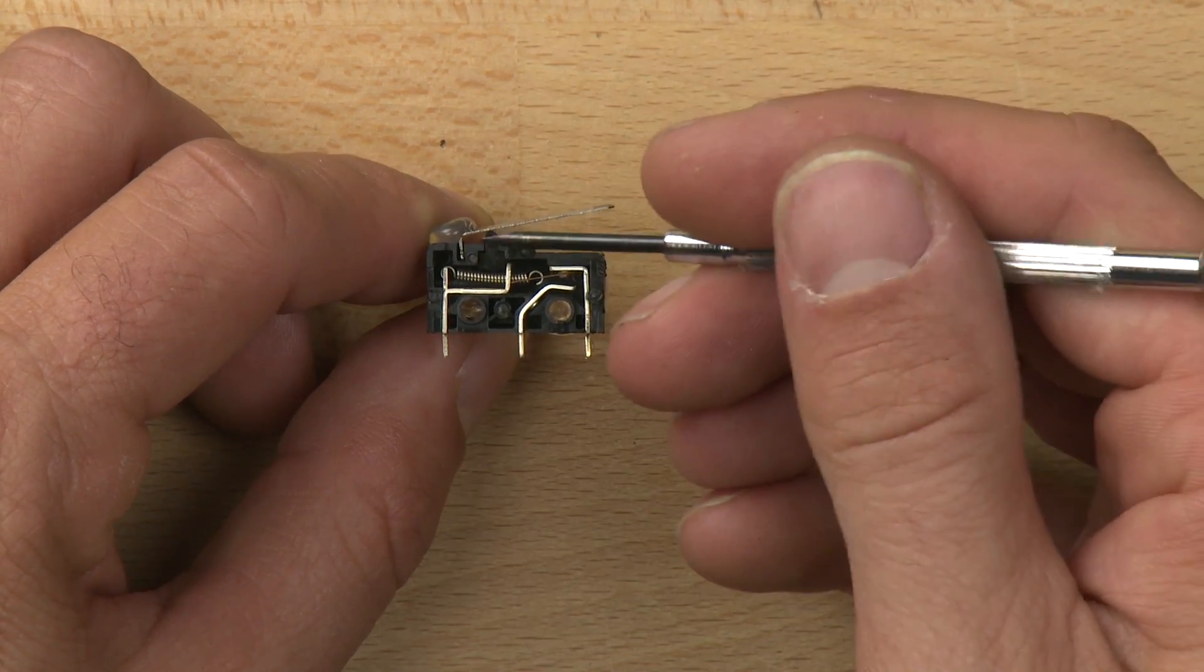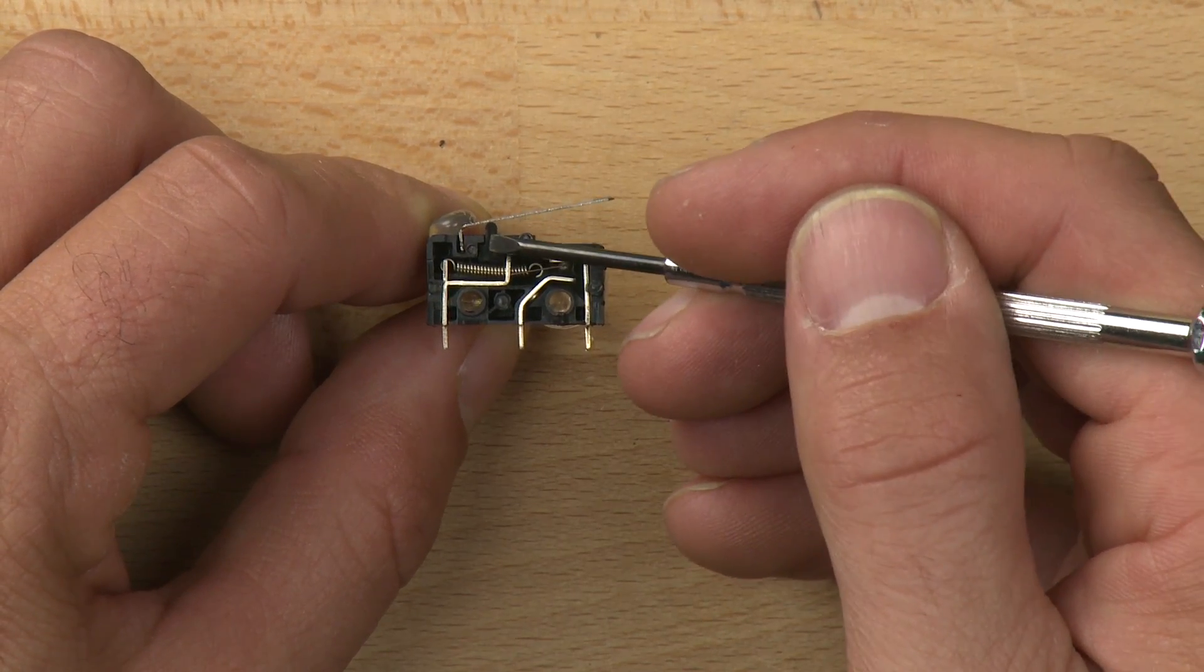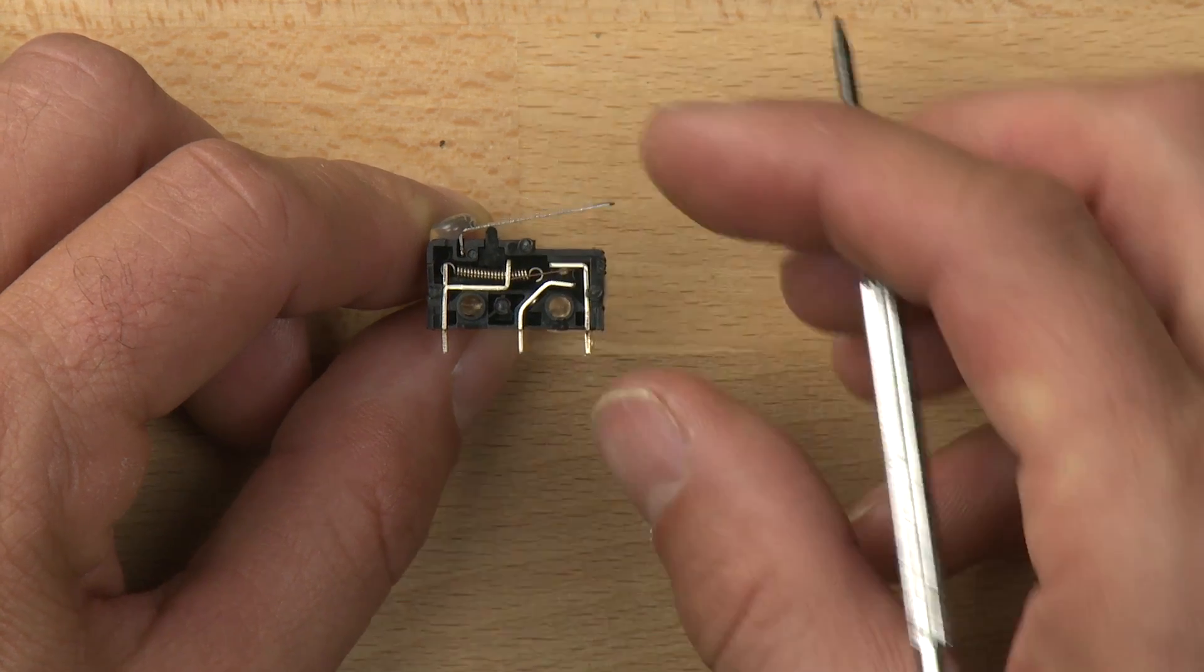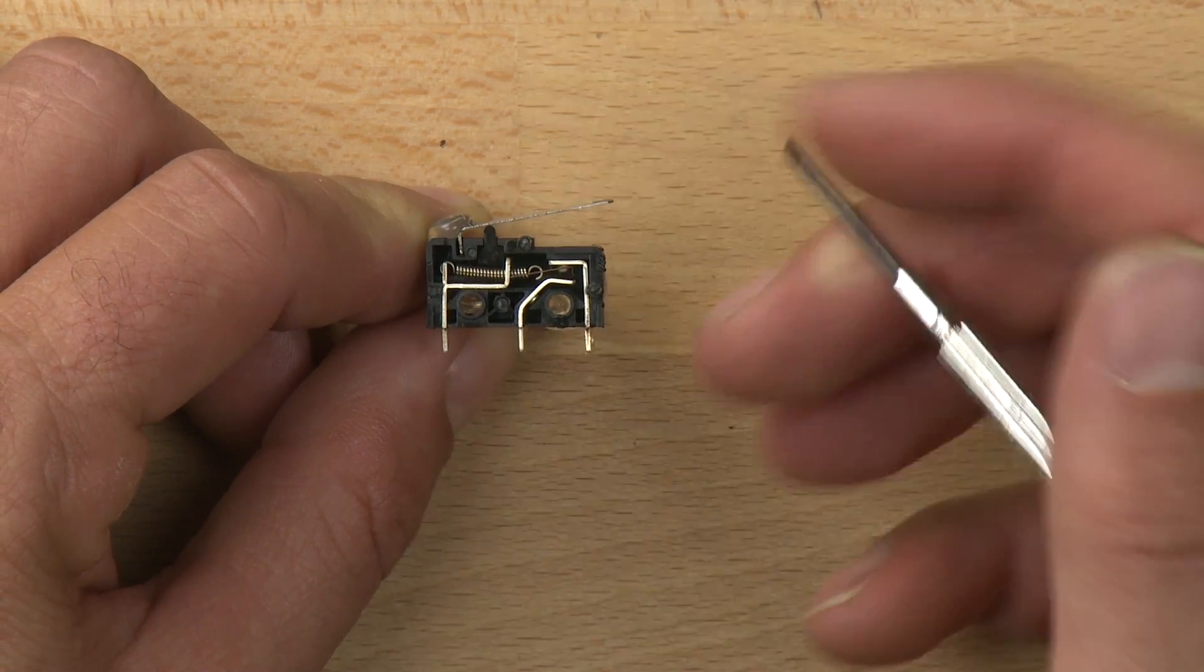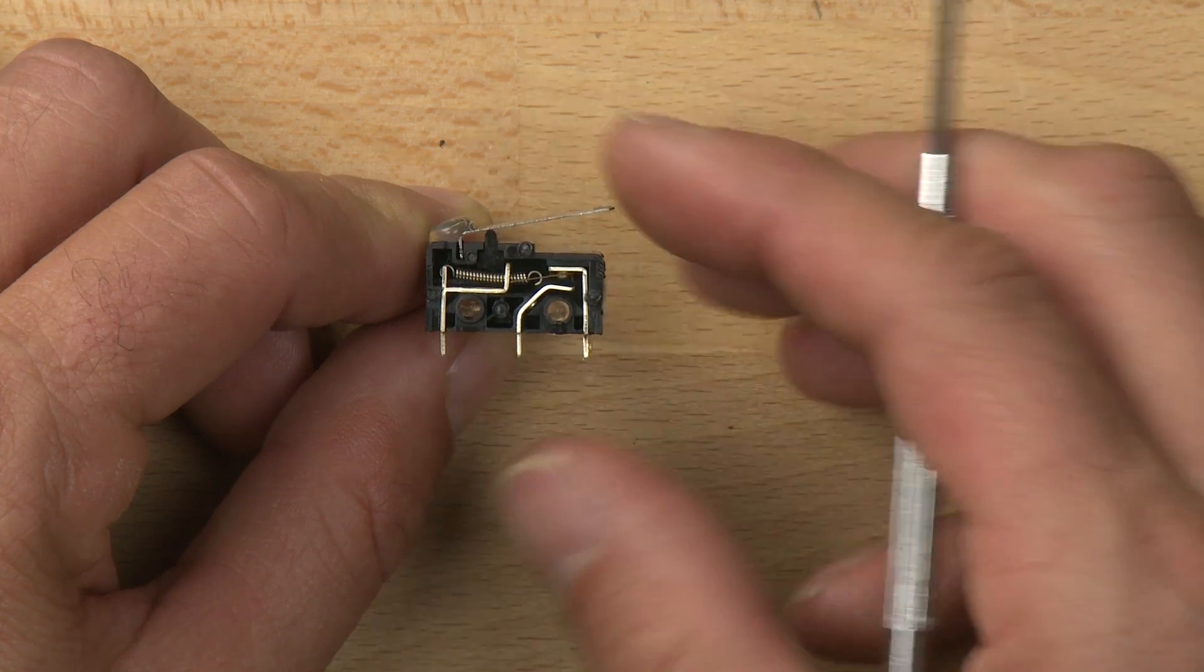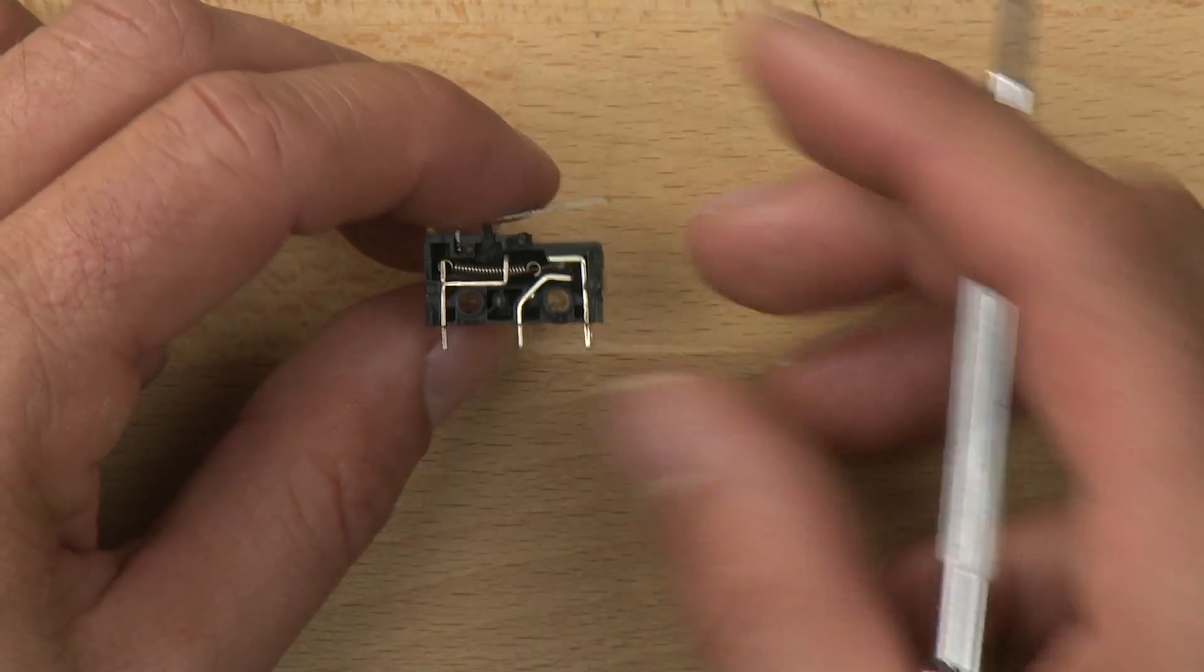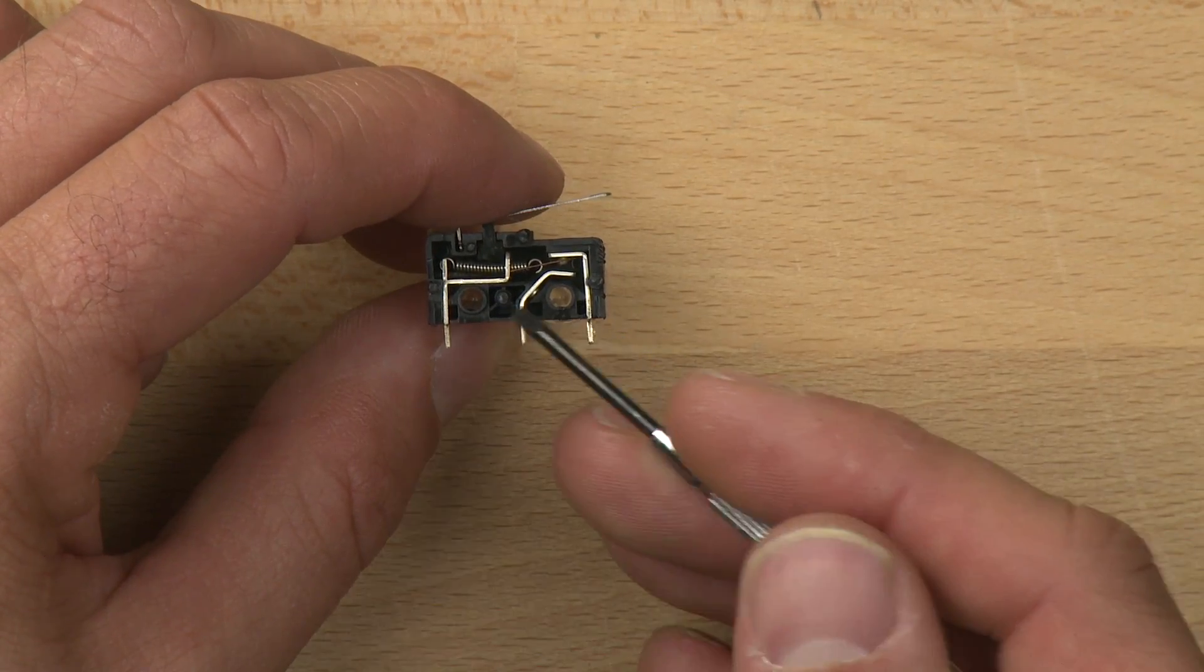You can see what happens is there's a little tiny plastic hammer here that pushes against a spring, so the lever causes the spring to push down on this copper contact. That is switching between this side and this side.